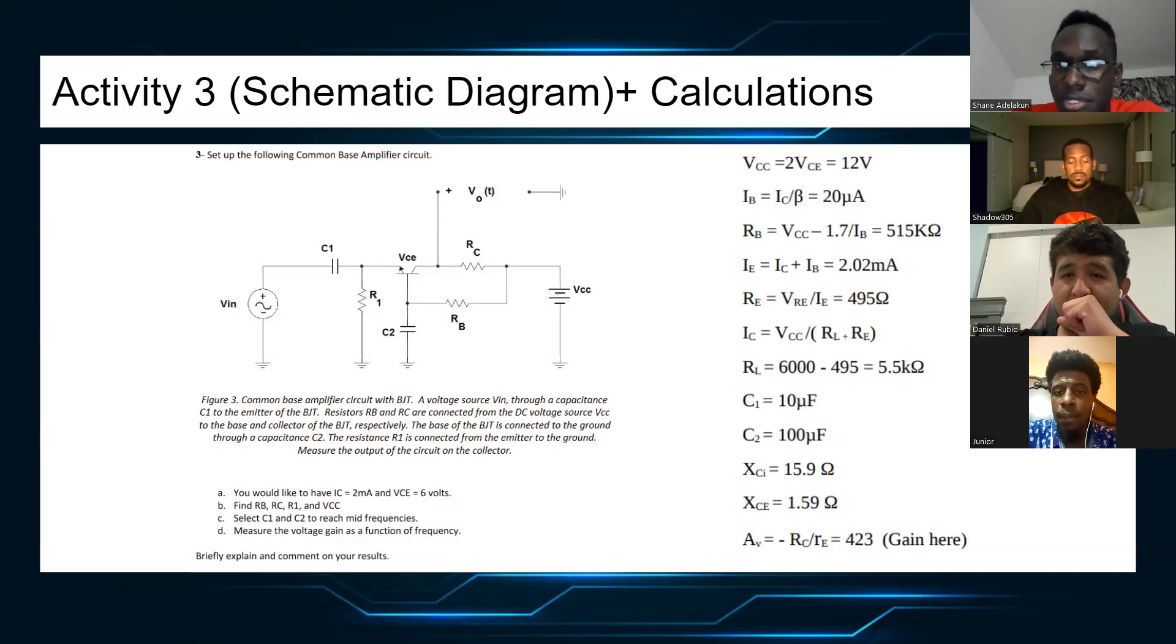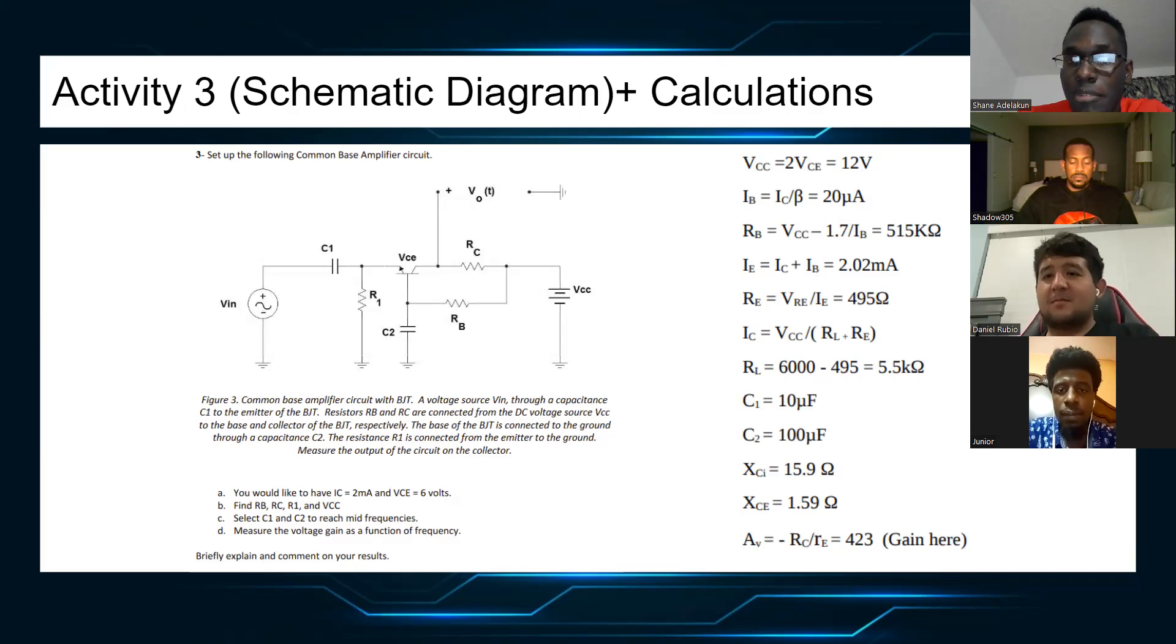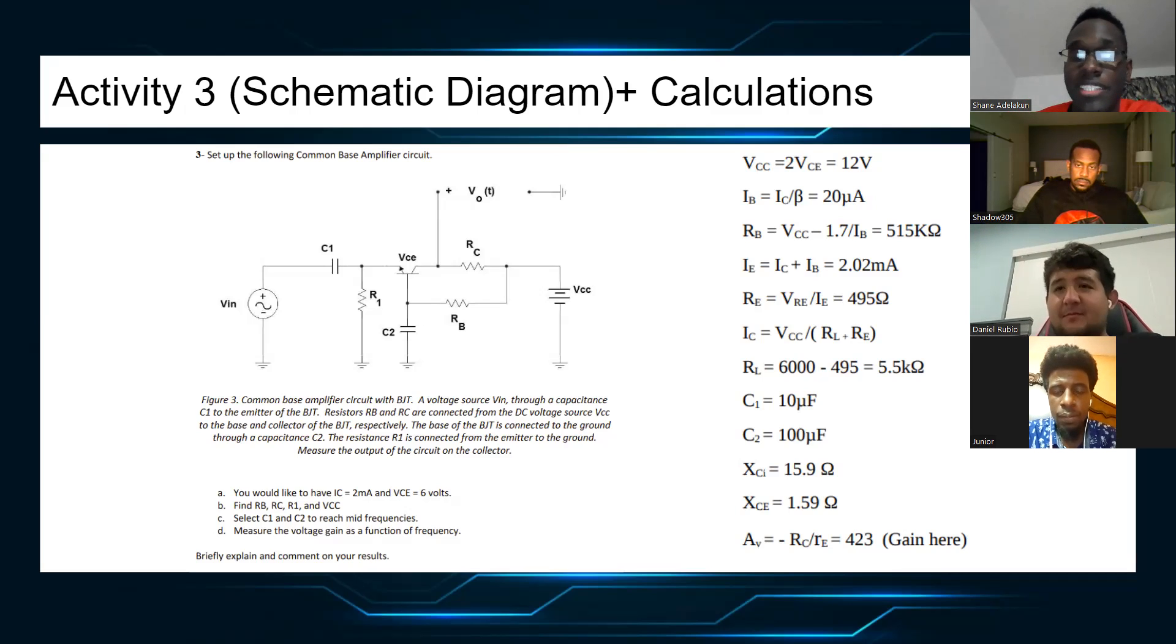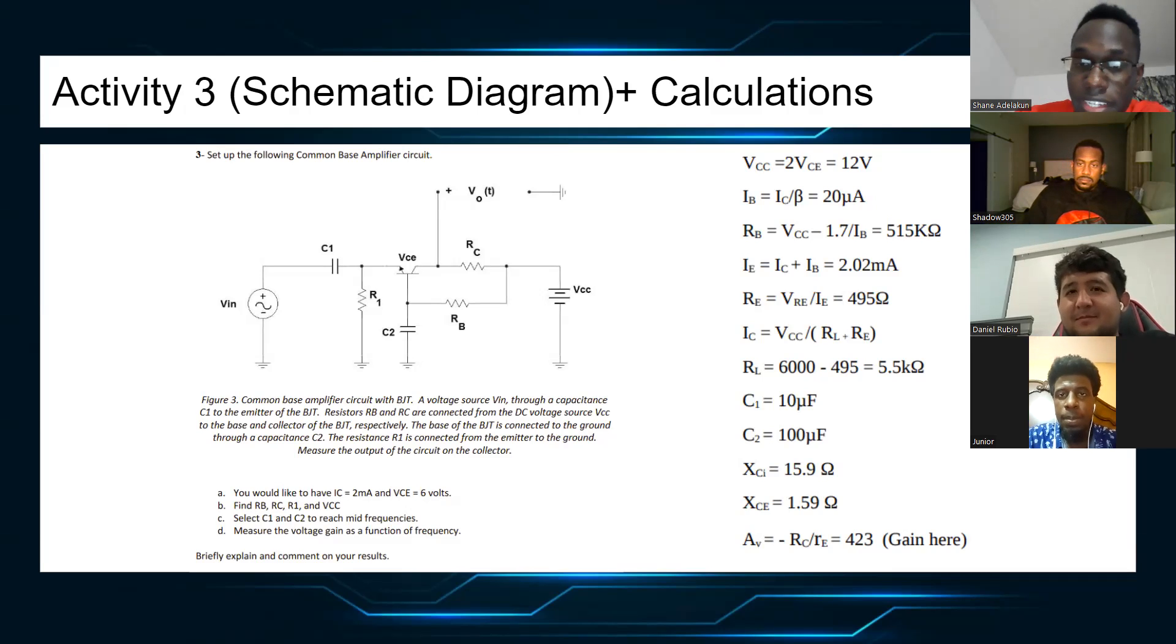As you can see, to our right-hand side of calculations, somewhat similar to 1 and 2. Since we use the same base, same voltages. Our voltage for VCC equals 12 volts. IB is going to equal 20 microamps. RB is 515 kilohms. IE is going to be 2.2 milliamps. RE is 495 ohms. IC is basically VCC over RL plus RE. And RL equals 6,000 minus 495, and that gives us 5.5 kilohms. Our C1 is going to equal 10 microfarad. C2 is 100 microfarad. XC1 is 15.9 ohms. XC2 is 1.59 ohms. And our gain in the bottom is going to equal 423.